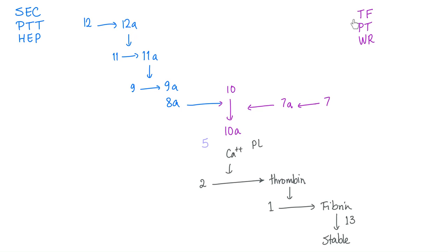The extrinsic pathway is activated by tissue factor; the intrinsic pathway by subendothelial collagen. You monitor the extrinsic pathway with PT — prothrombin time — or PT-INR, the International Normalized Ratio, which gives standardized results worldwide. You monitor the intrinsic pathway with PTT. Mainly warfarin inhibits the extrinsic pathway; mainly heparin inhibits the intrinsic. In reality both drugs affect both pathways, but it's just easier to monitor warfarin with PT and heparin with PTT.